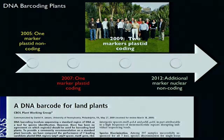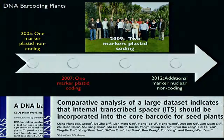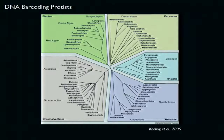For plants it has been much more difficult to converge. It started from a plastid non-coding region marker in 2005, then went to one-marker plastid coding, then a two-plastid marker system from a large plant working group. In 2012, they added another non-coding nuclear marker to get more resolution. These are community efforts to build a better system for identifying plant biodiversity.